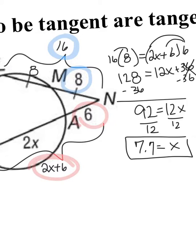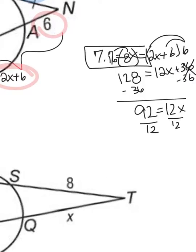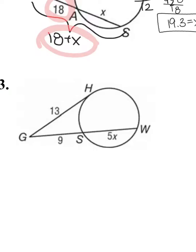Question number three. This time I have a tangent and a secant. The rule still applies that it's the whole thing times the external. But when I have a tangent line, the whole thing is the external, so it'll be the external piece squared. It's 13 times 13. We don't need to write 13 times 13, we can write 13 squared equals the whole thing times the external. 9 plus 5X times 9.